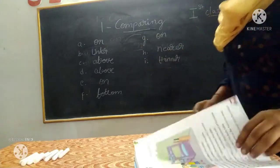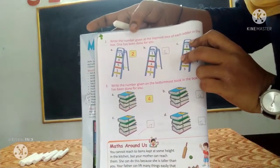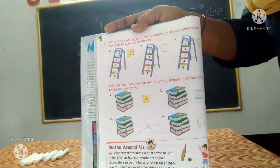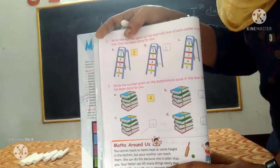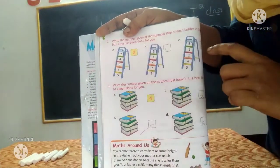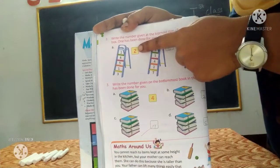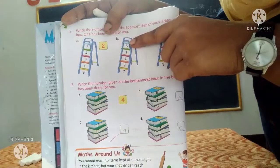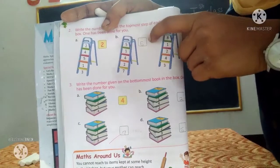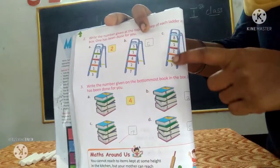Page number 3 answers complete. Now turn the page to page number 4. Write the number given at the topmost step of each ladder in the box — one has been done for you. The topmost means the first number at the top. For example, first ladder topmost number is 2 — write 2 in the box. Next ladder topmost number is 5 — write 5 in the box.